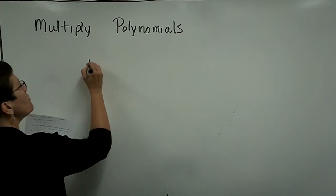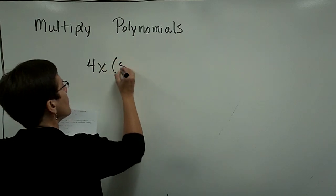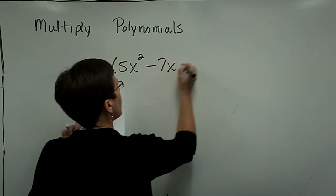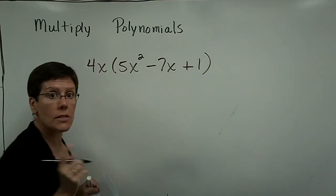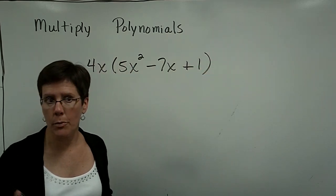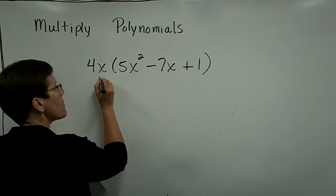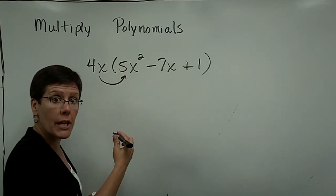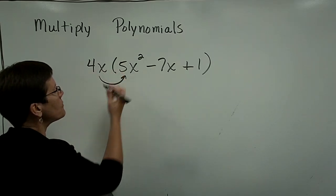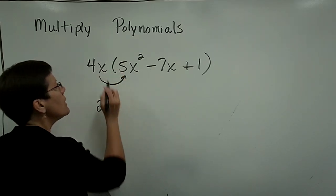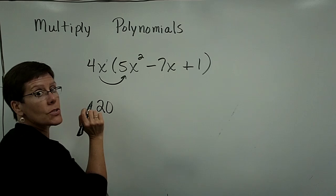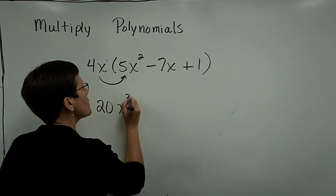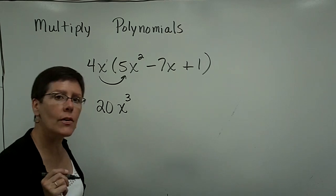Next problem. Let's take 4x times 5x squared minus 7x plus 1. So it's a monomial times a trinomial. And so you just take that monomial and multiply it times each term. I like to use these arrows to make sure I don't forget anything. So the 4 times the 5 is a 20. This is an x to the first. x to the first times x to the second is x to the third because you add those exponents.